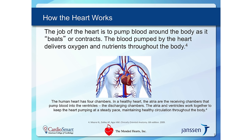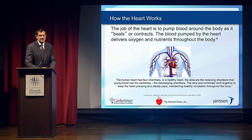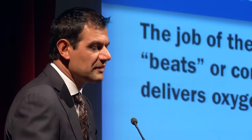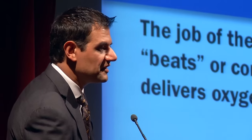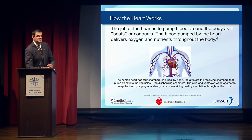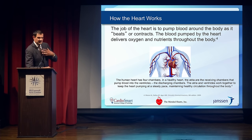The heart passes blood through multiple chambers, controlled by valves. The right side pumps blood to the lungs; the left side pumps blood to the rest of the body. There are four chambers total: two lower chambers called ventricles, which are the actual pumps, and two upper chambers called atria, whose job is to gather blood to prime the pump. The upper chambers also generate the heartbeat as an electrical signal.